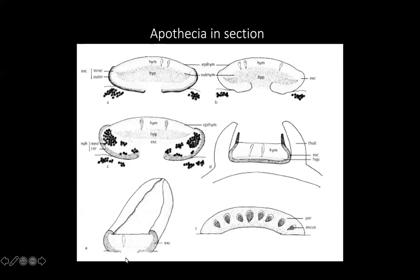A lirellate apothecia, as in Graphis, is an elongated tunnel-like structure with the disc inside and the excipulum wrapping around. Different views when you section an apothecia may show the asci arranged with paraphyses as tissue surrounding them all around.